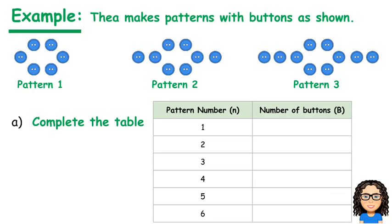So we've been given these three different patterns. And the first thing we've been asked to do is to complete the table. So pattern number 1, if I just want to count up my number of buttons: 1, 2, 3, 4, 5, 6. So pattern number 1 has 6 buttons.